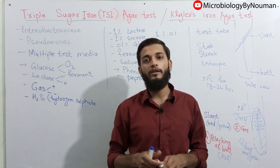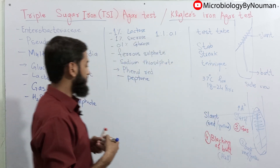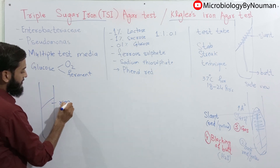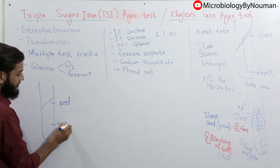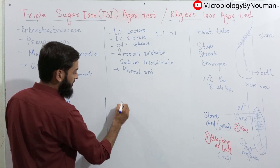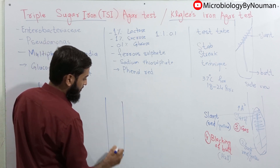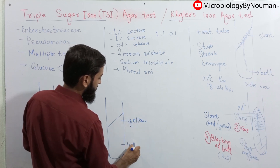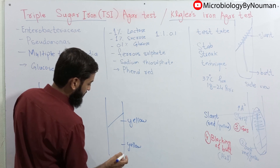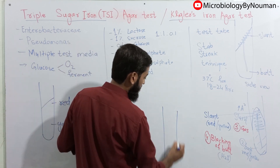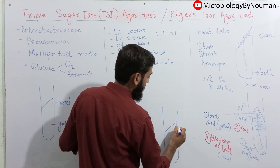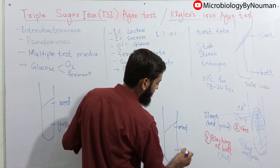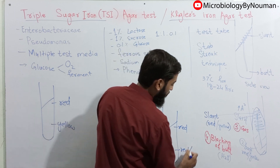There could be three possible results of this test, and we will talk about them one by one. The first result could be red slant and yellow butt. The second result could be yellow slant and yellow butt. And the third result could be red slant and red butt, or red slant with no change in color.